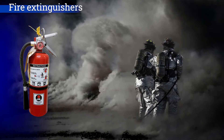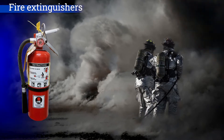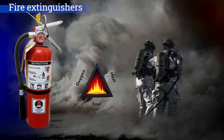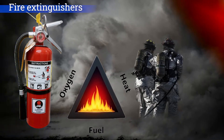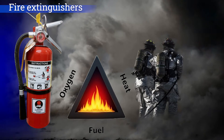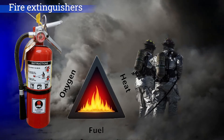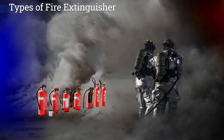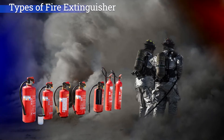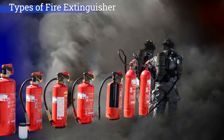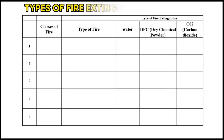Fire extinguishers are handy tools that can save lives and property in case of a fire. They work by interrupting the fire triangle, which is made up of heat, oxygen, and fuel. By removing one of these elements, the fire is extinguished. There are different types of fire extinguishers, each designed to tackle a specific type of fire.